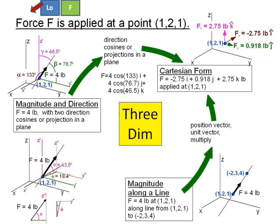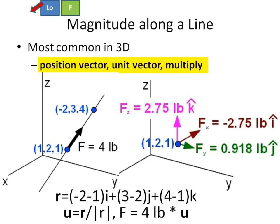In 3D we have the same options, but it's much less common that you will use magnitude and direction without changing into Cartesian form. Once you get to 3D, this is pretty much where we live. From magnitude along a line, you're going to find your position vector unit vector multiply. This is, I've given you two points, and I know that there's a force that lies along that line connecting those two points.